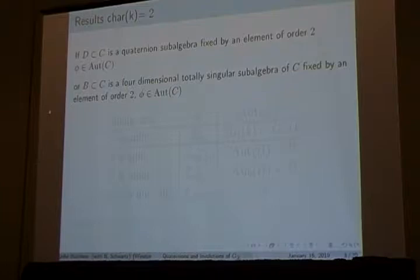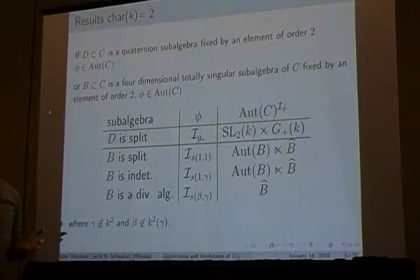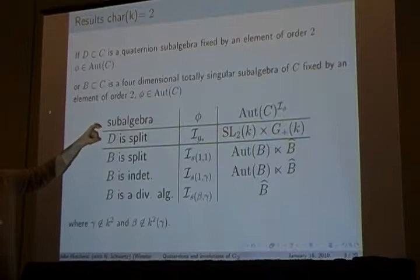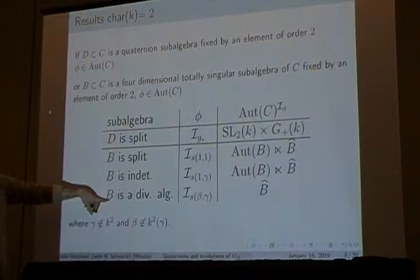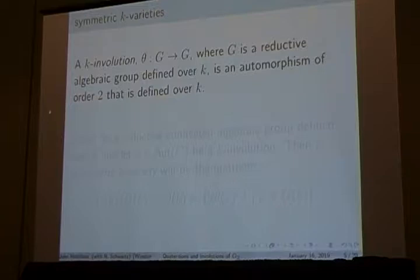These other four-dimensional subalgebras have a totally singular bilinear form, so everything is perpendicular to everything in them. This breaks apart in an interesting way because if you take a field of characteristic two over a function field, you can get division algebras that are quaternion, but there are no involutions that fix them. The only involutions that fix a quaternion subalgebra fix split types. The only thing that's sort of like a division algebra are these totally singular subalgebras that only exist in characteristic two.